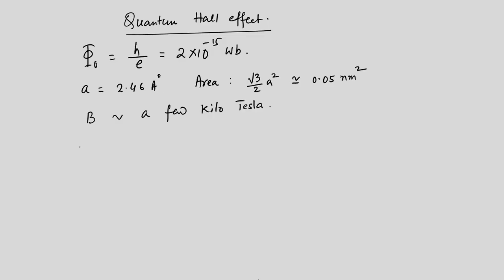We will use a Landau gauge: A = −By x̂. We could also take A = Bx ŷ, which gives the same result. To remind you, the Hamiltonian in this case is H = v_F σ·p, or equivalently H = ℏv_F σ·k, where p is the momentum and k is the wave vector.